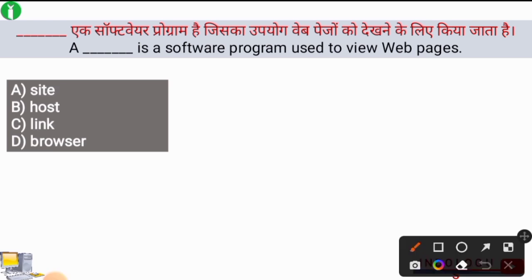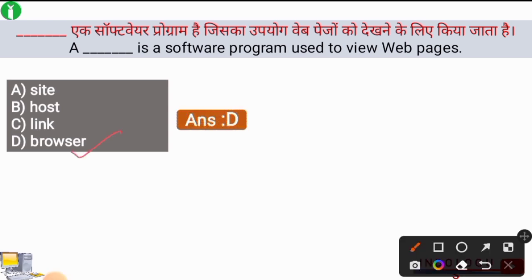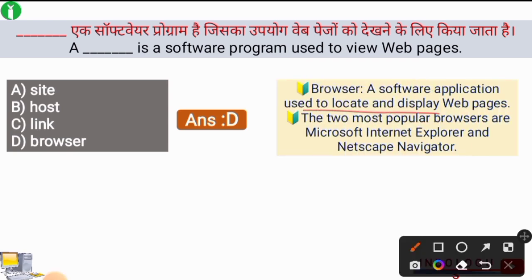Next question: A software program used to view web pages is called what? A browser is a type of software program which is used to view web pages. A browser is a software application used to locate and display web pages. The two most popular browsers are Microsoft Internet Explorer and Netscape Navigator.